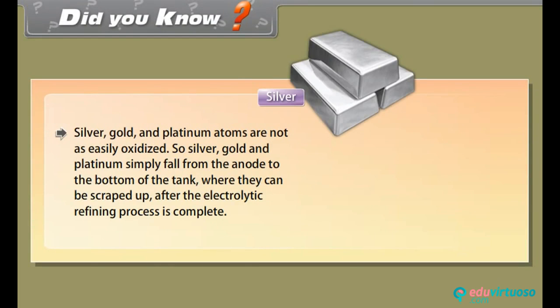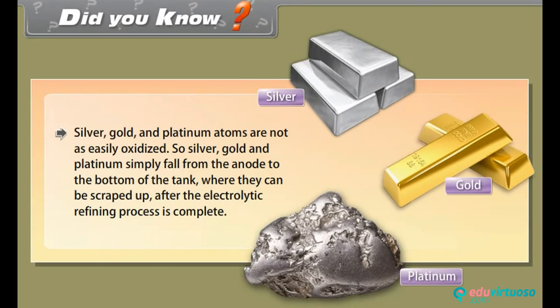Did you know? Silver, gold and platinum atoms are not easily oxidized. So silver, gold and platinum simply fall from the anode to the bottom of the tank where they can be scrapped up after the electrolytic refining process is complete.